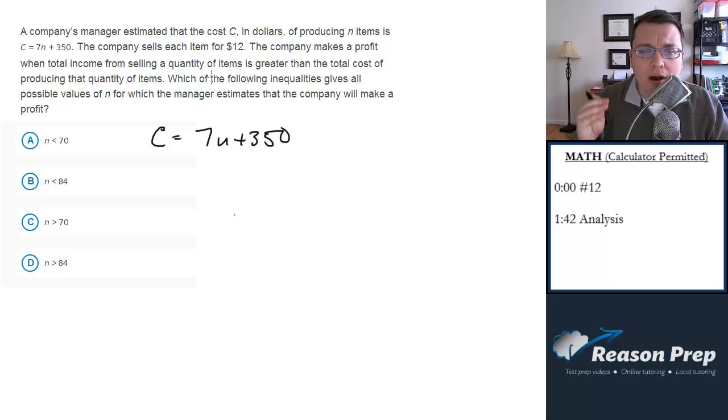So let's figure out what is the amount of money if this company is selling n items, which it's produced according to the cost in this equation. If you're selling n items, what is the total income, the revenue you're going to get from that sale? Well, you're going to sell each item for 12 bucks. So the revenue, we'll call it r, we'll call it i for income, just to be consistent with the problem. The income is 12n, 12 times n.